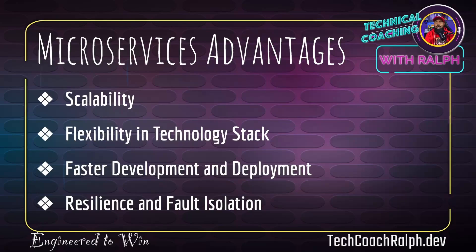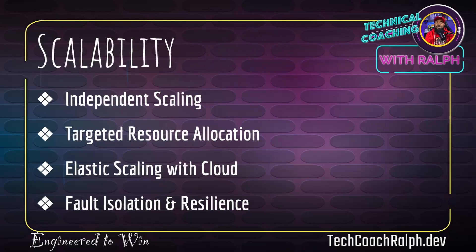Some advantages to microservices include scalability, flexibility in the technology stack, faster development and deployment, and resilient fault isolation. For scalability, you can allocate the right amount of resources for each microservice — CPU power, memory, disk space, number of databases — with targeted resource allocation. With elastic scaling on cloud platforms like AWS, you can set thresholds so that if memory or CPU usage reaches a certain level, resources are added automatically. Fault isolation means if something goes wrong in one microservice and it goes down, it shouldn't affect the other ones.